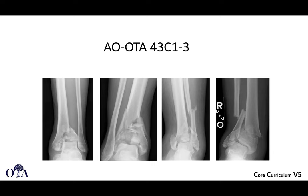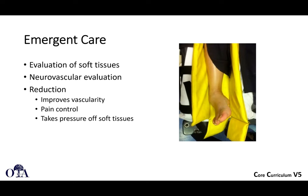In the emergent situation, evaluate the soft tissues and perform a neurovascular evaluation. Reduce these fractures to improve vascularity, help with pain control, and importantly take pressure off the soft tissues. With normal anatomy, bone is right under the skin, so extreme deformity over a short time can cause ulceration of the soft tissue envelope, potentially converting a closed injury into an open one.